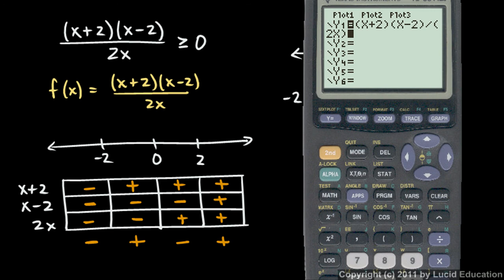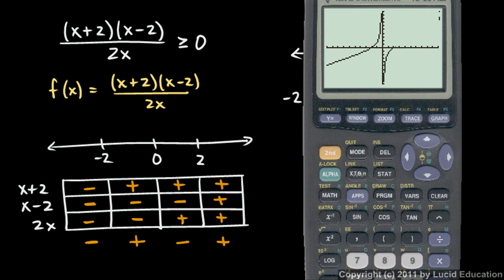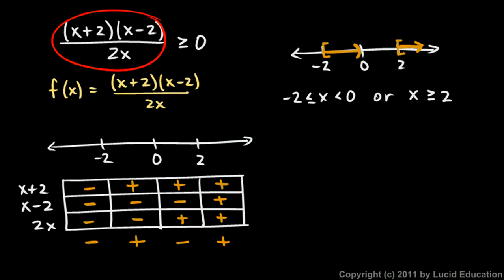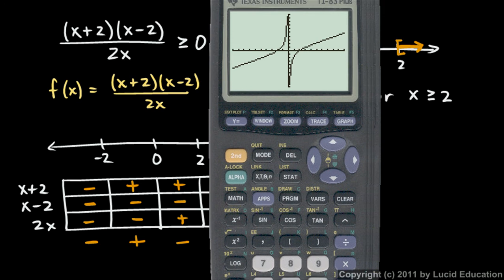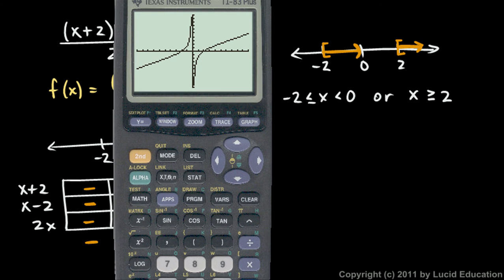We can verify this by graphing x plus 2 times x minus 2 over 2x in the calculator. On standard zoom, we see a vertical asymptote at 0 and a slant asymptote. Looking at where the function is greater than or equal to 0: it's above zero from negative 2 all the way to 0, and then everywhere to the right of positive 2. That's exactly what we had — the graph confirms the vertical asymptote at 0 and the solution intervals.